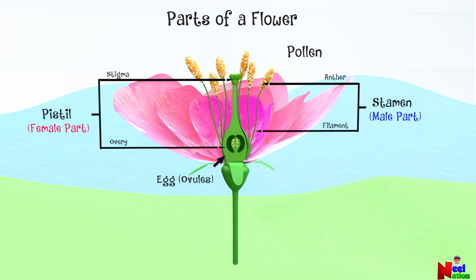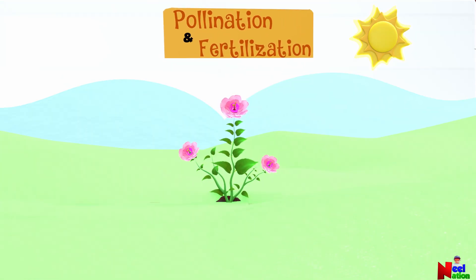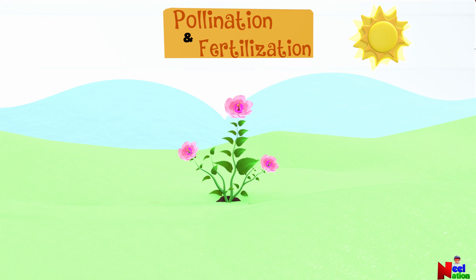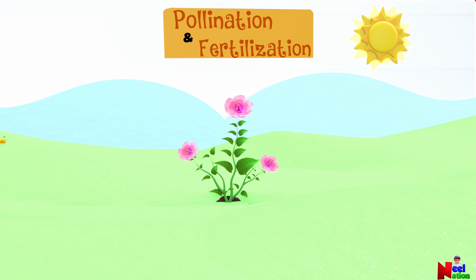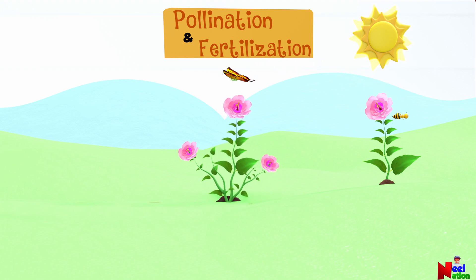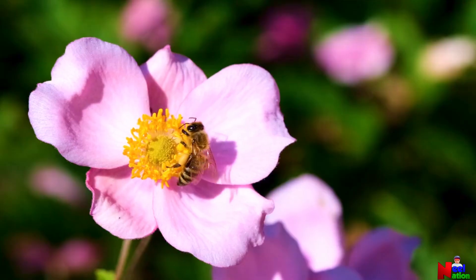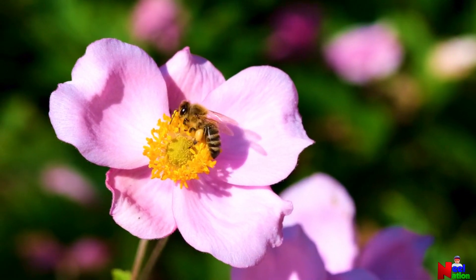These parts work together in a process called pollination and fertilization. The plant needs a little help to make seeds — that's where bees, butterflies, and sometimes even the wind come in. They carry tiny things called pollen from one flower to another, helping the plant make seeds.